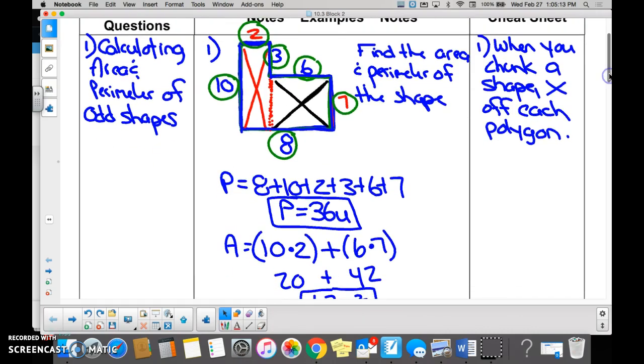Then for number one, we had to find the area of this shape. And we know the area of a rectangle is base times height, but is this a rectangle? No. So we had to make it into a rectangle. So what we did is we, what do we call this thing again?